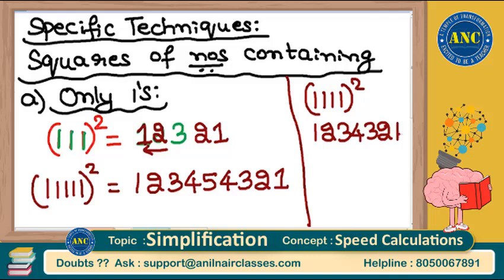These are the specific techniques for squares of numbers containing only ones. The concept is clear: count the ones, write up to that count, then reverse back to one.